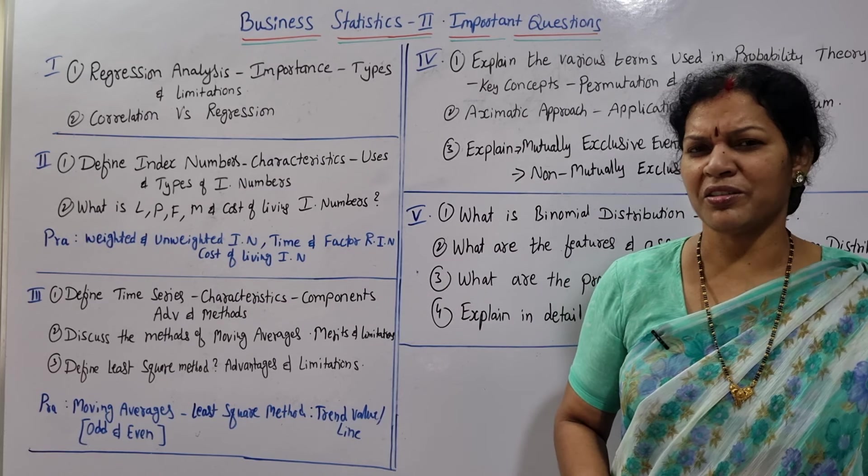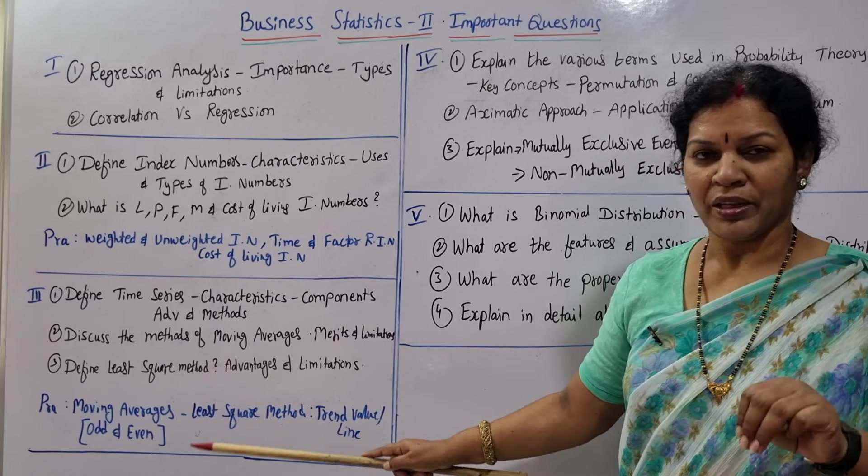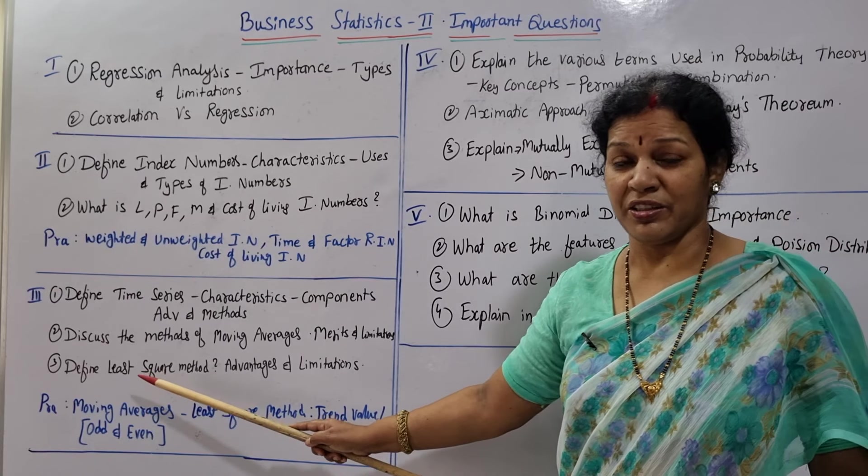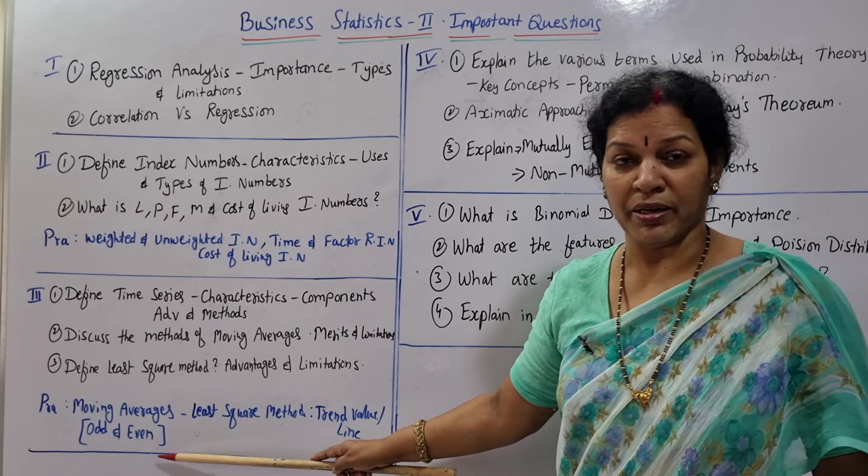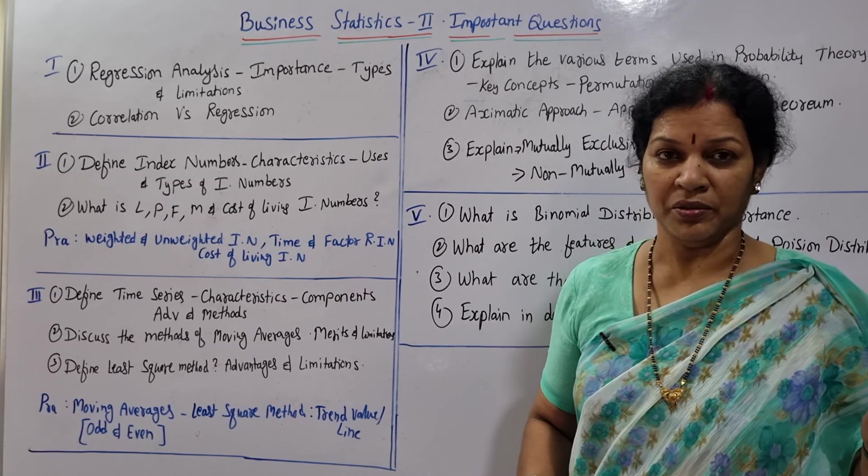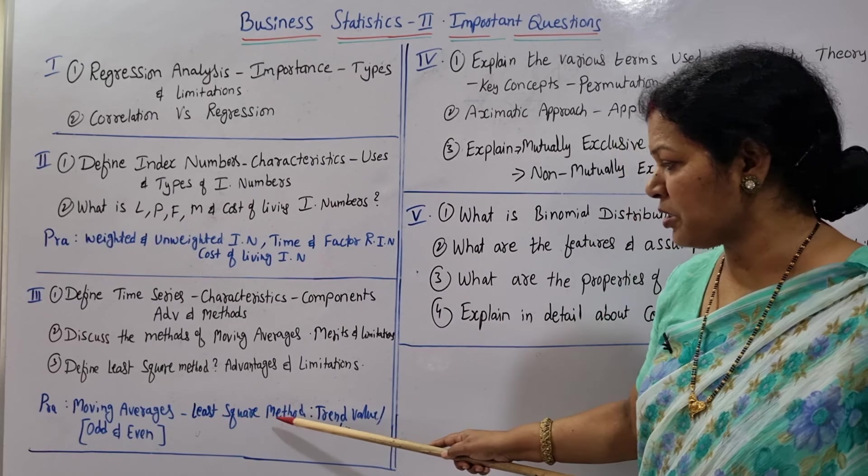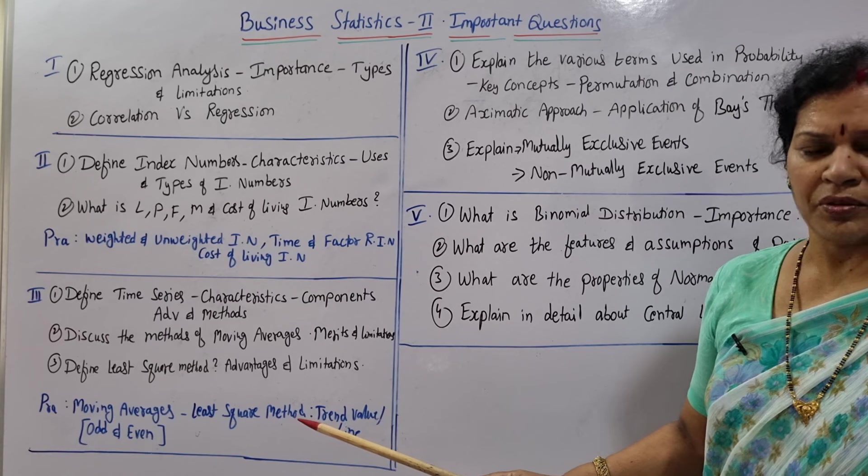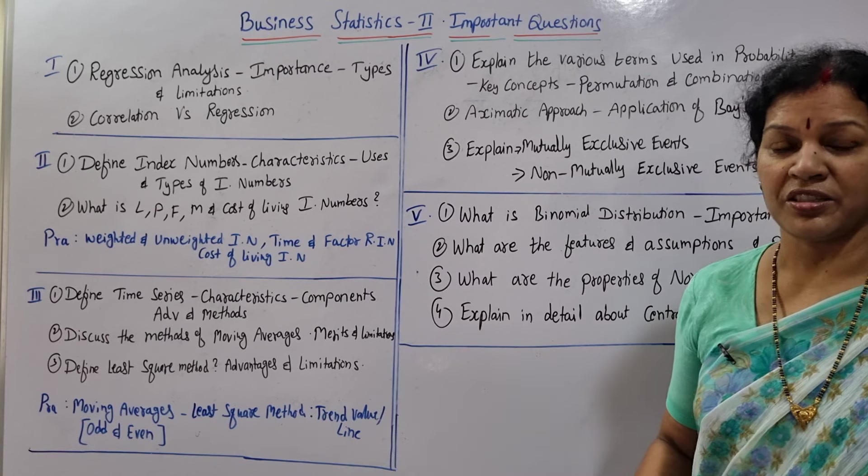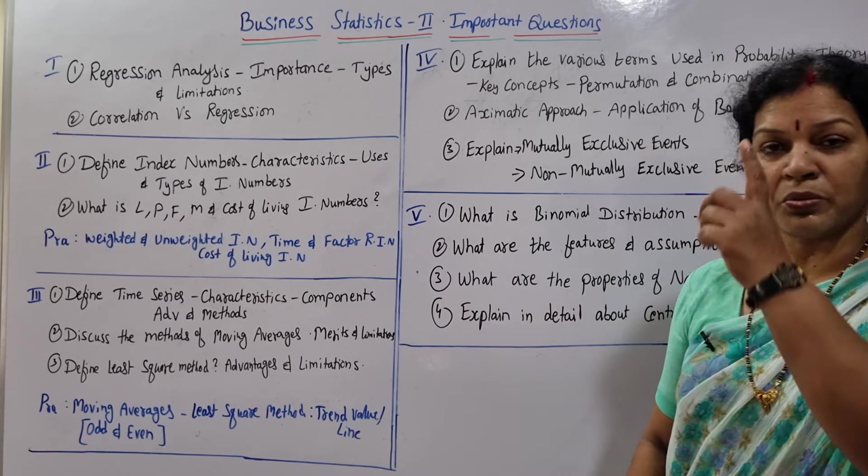Only three questions I have given you. And practicals, what you can expect is moving averages - one problem you can expect in moving averages. You'll find odd number and even number, whether odd or even, both sides you must be thorough, be prepared. And another practical question you can expect is least square method - you can calculate trend value and also trend line, you can construct it. Only two practical problems: moving averages and least square method.